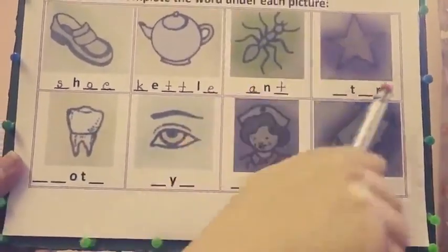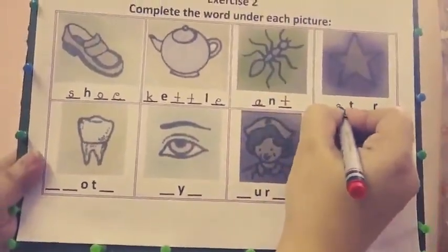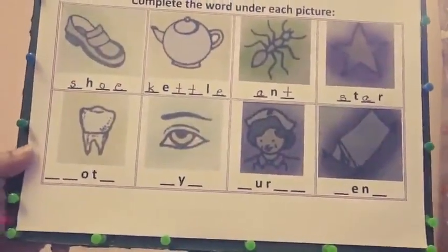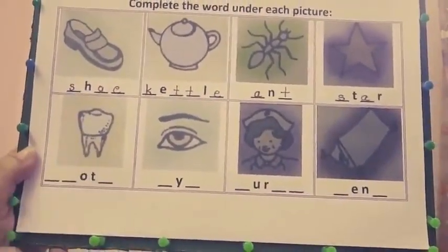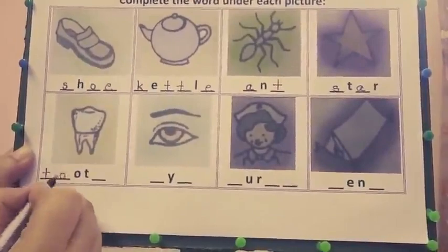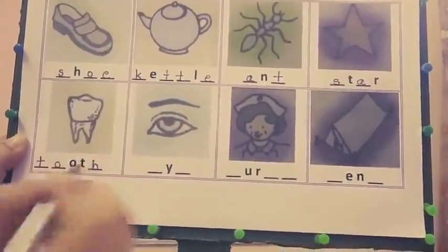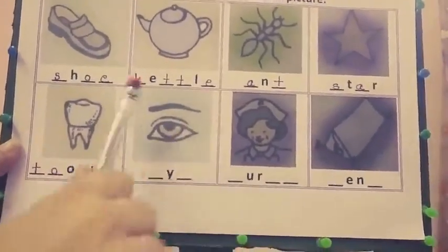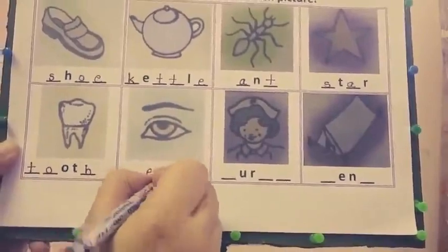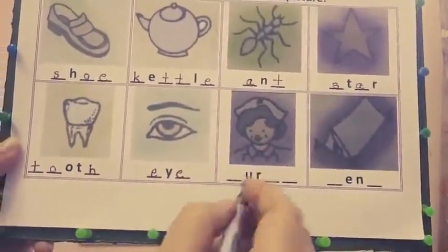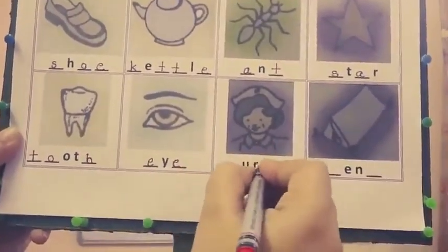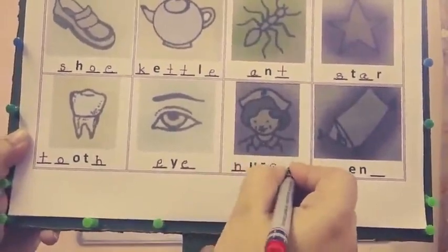In the next picture — star. S-T-A-R. In the next picture — what is the singular of teeth? Tooth. T-O-O-T-H. This is an eye. E-Y-E. In the next picture — she's a nurse. N-U-R-S-E. Nurse.